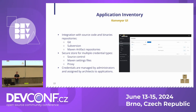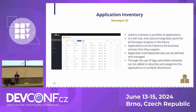To work with an application in Konveyor, you need access to its source code or binaries. Source code can be pulled from Git, Subversion, or Maven repositories. Konveyor provides proxy credentials, authentication, and all relevant things to get the source code to the analyzer. For populating the inventory, since organizations can have tens or hundreds of applications, it is also possible to use a CSV — which is old-school but works for some organizations — so they populate a spreadsheet and upload it.